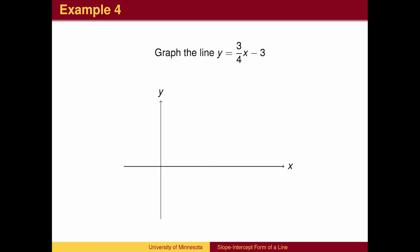In this example, we are given the equation and wish to graph the line. The y-intercept is negative 3, so we can place a point at 0, negative 3. The slope is 3 fourths.